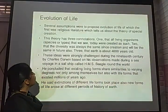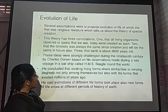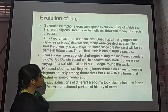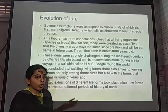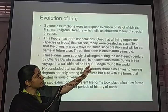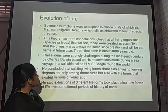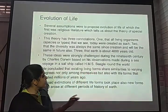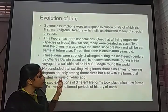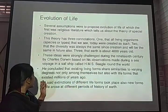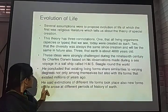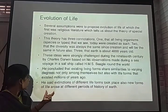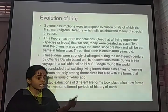Regarding the evolution of life, it has been described by Charles Darwin, who is called the father of evolution. He conducted a voyage for five years on a ship called H.M.S. Beagle around the world. He concluded that existing living organisms share similarities to varying degrees, not only among themselves but even with life forms that existed millions of years ago. He noted that extinction of different life forms took place, and new forms of life arose at different parts of the history of the earth.